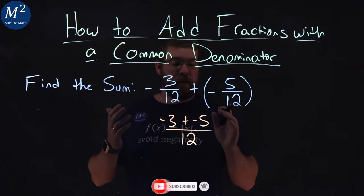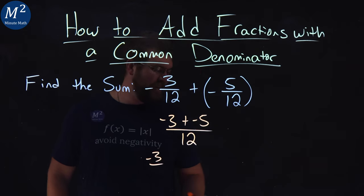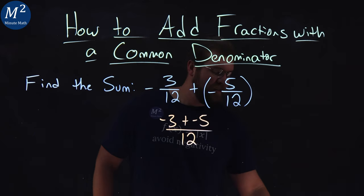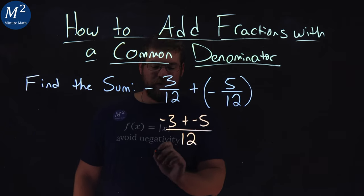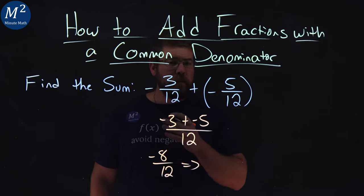From there, we need to simplify. Negative 3 over, whoopsie, negative 3 plus a negative 5 is a negative 8. Negative 8 over 12, and that can be simplified.